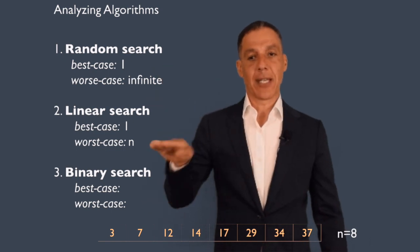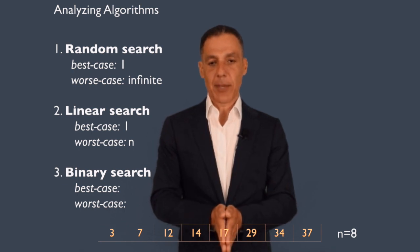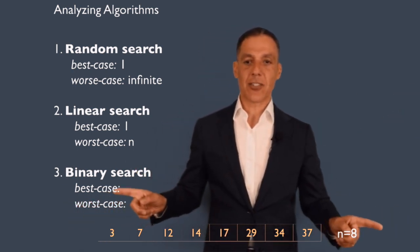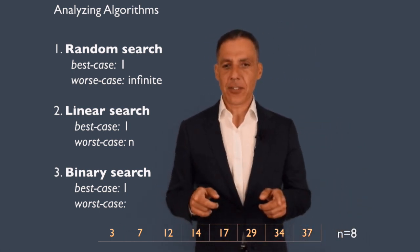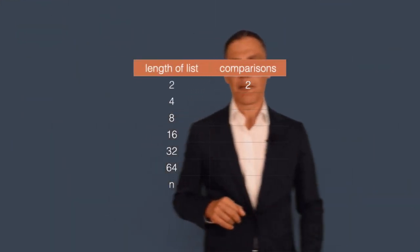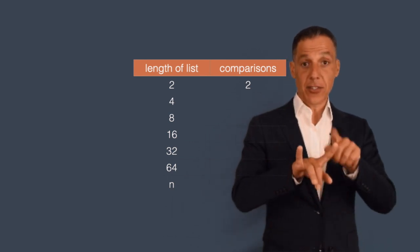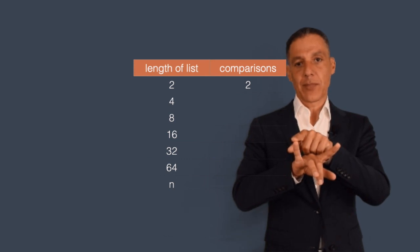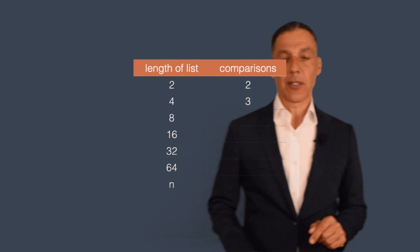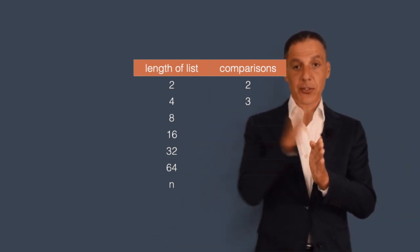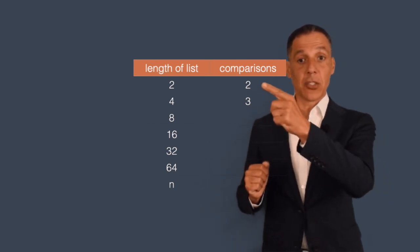For binary search, the best case is still one — you get lucky and the midpoint is exactly the element you're looking for. For the worst case, consider a list of two elements: you need at most two comparisons. Now double to four elements: one comparison splits the problem in half, leaving two elements, which costs two more — so three total. Double again to eight elements: one comparison, then four elements remaining, which costs three — so four total.